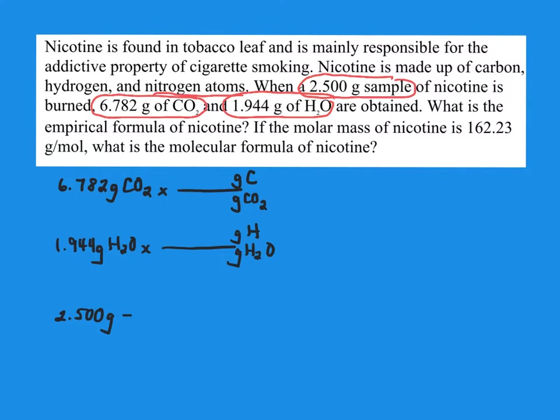Let's take a look at this problem. So I've got my grams of CO2. So for every 12.01 grams of carbon, there's 44.01 grams of CO2. And this is 1.851 grams of carbon.